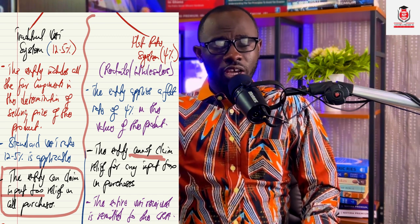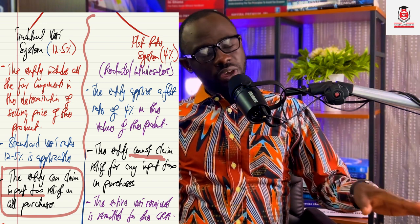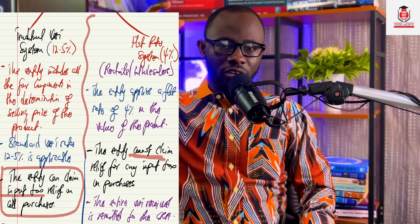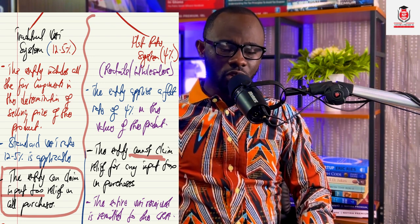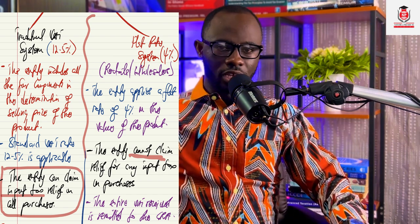The fourth key area is value-added tax — a very huge area and there is definitely a question waiting in the exam hall on VAT administration. There are two broad systems: the standard VAT system at 12.5%, and the flat rate system at 4% — which is 3% for VAT and 1% for the COVID-19 levy. Under the standard VAT system, NHIL 2.5% and GetFund 2.5% are added to the value of goods, then COVID-19 levy 1%, giving a gross amount exclusive of VAT, to which the 12.5% VAT is applied.